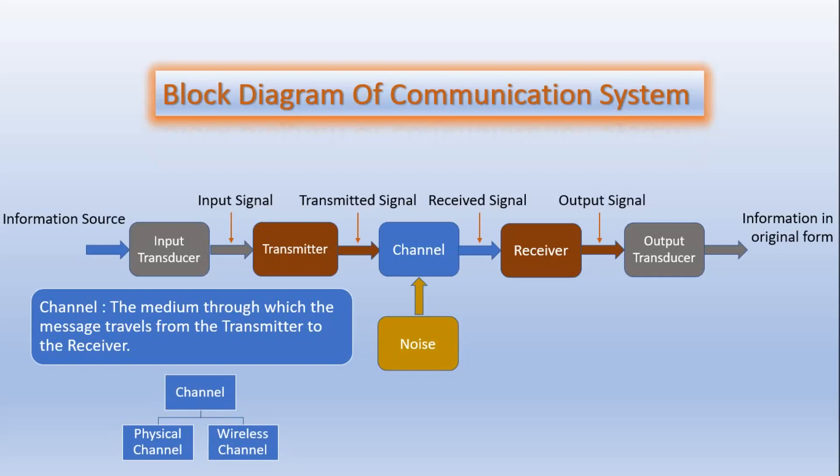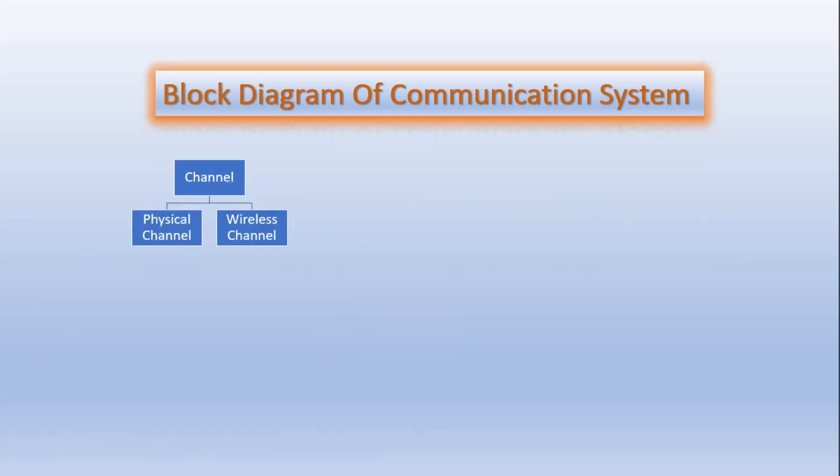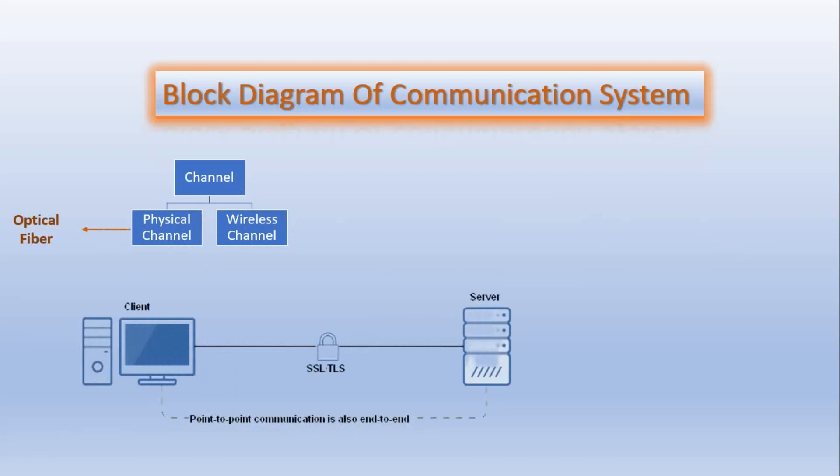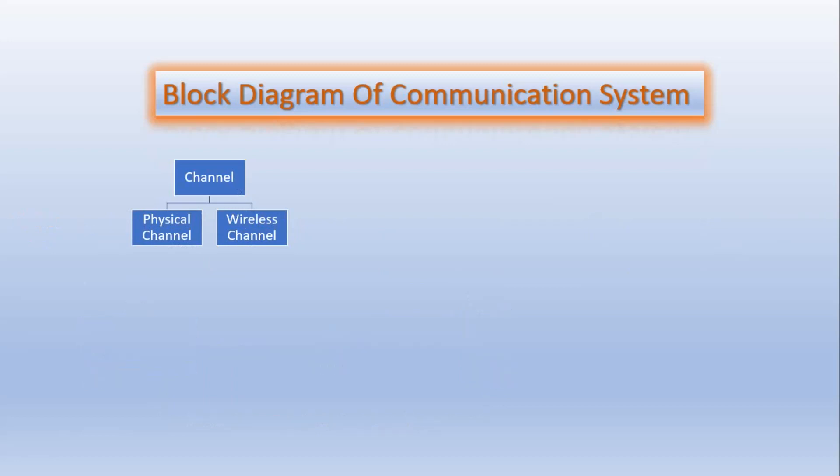Examples of point-to-point channels are wired lines and optical fibers, and the example of wireless channel is microwave link. Wire lines operate by guided electromagnetic waves and they are used for local telephone transmission. In case of microwave links, the transmitted signal is radiated as an electromagnetic wave in free space.